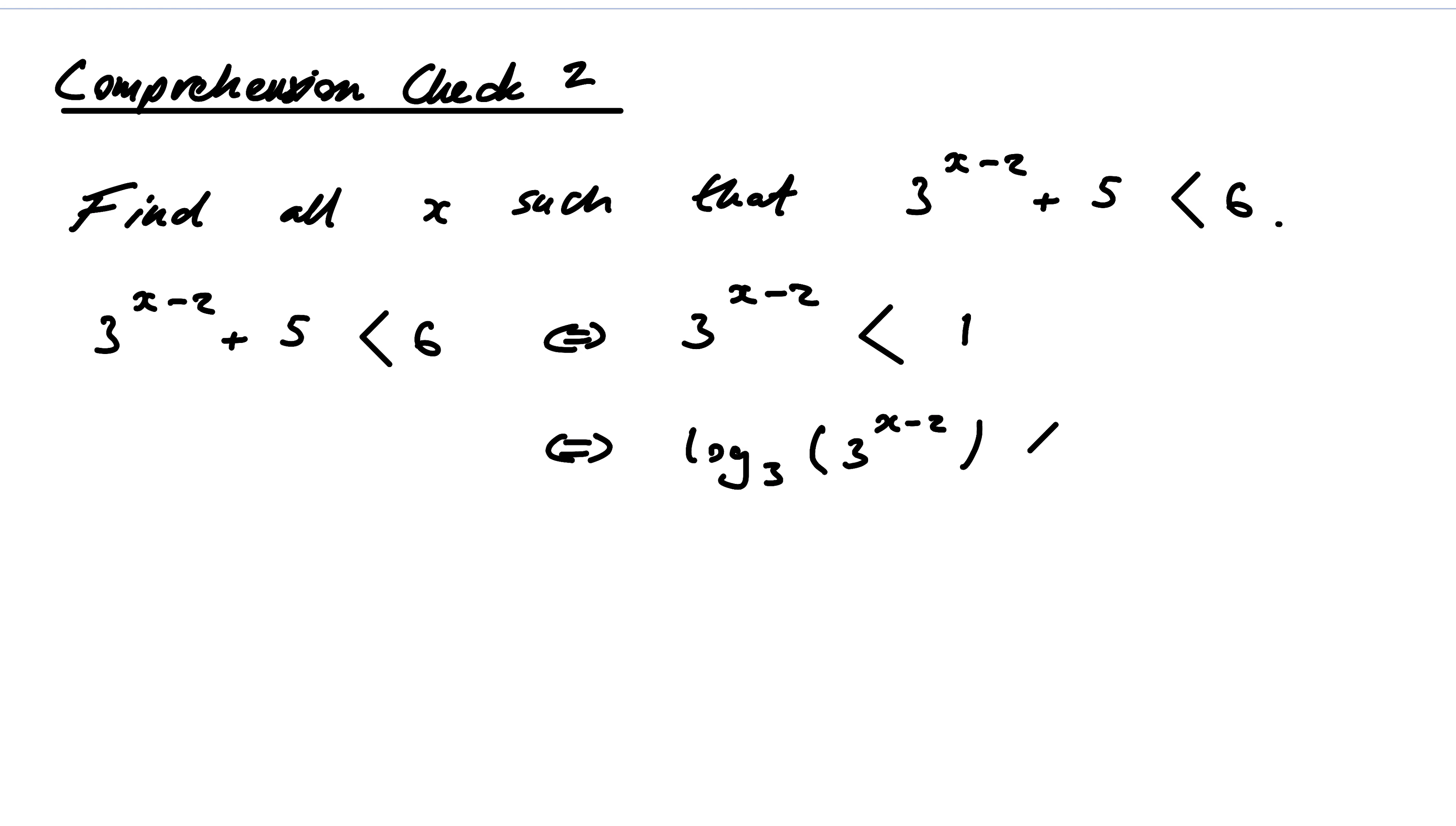So what's this if and only if? Well, by the cancellation property, this is x minus 2.